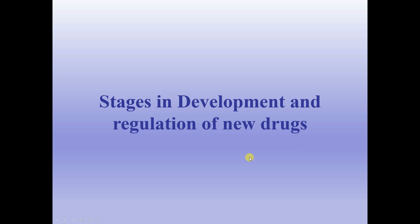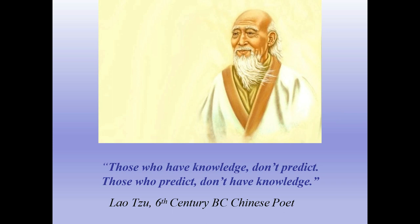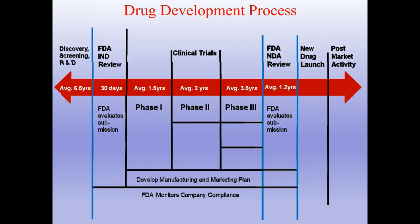The next part of our lecture covers stages in development and regulation of new drugs. As noted by Lao Tzu: 'Those who have knowledge don't predict. Those who predict don't have knowledge.' The drug development process in total takes around 10–15 years from the moment of discovery and screening of the drug to the new drug launch and post-market activity.